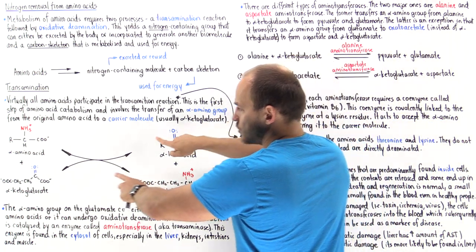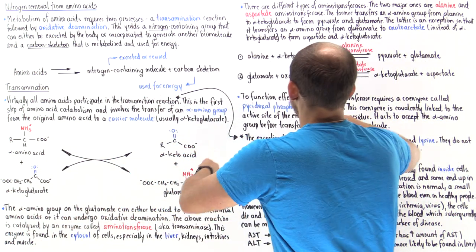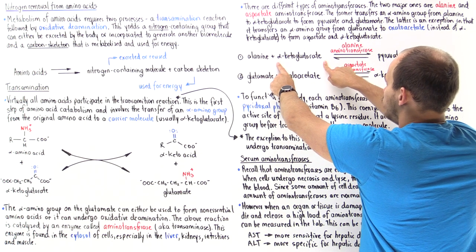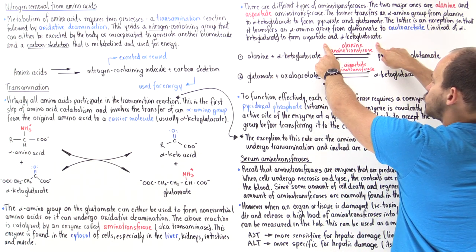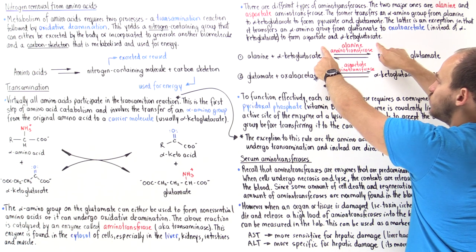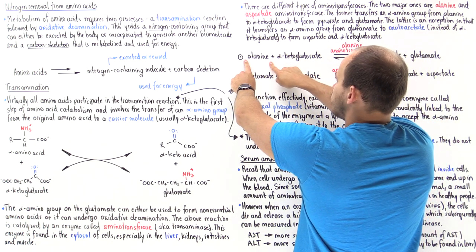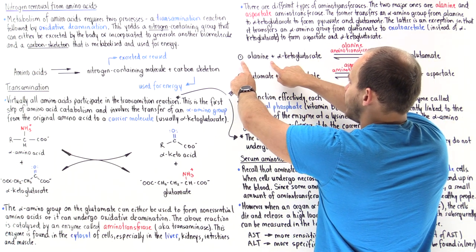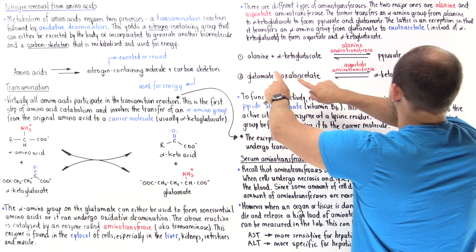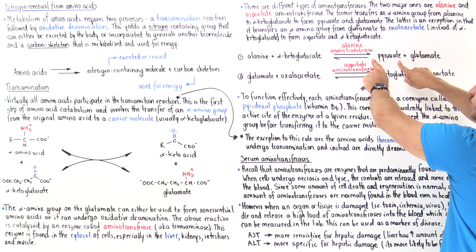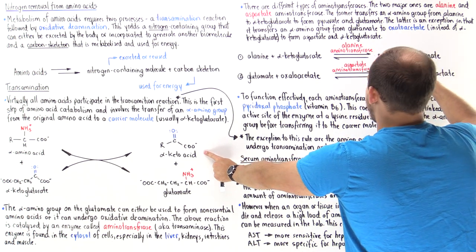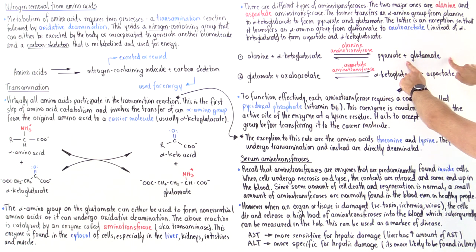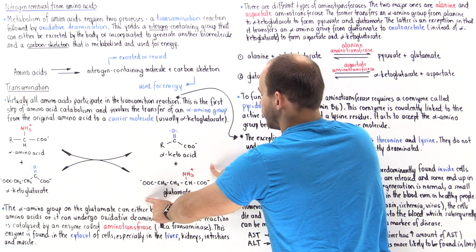Here we have alanine, which is our alpha amino acid, and here we have the carrier molecule that accepts that amino group — alpha-ketoglutarate. Alanine aminotransferase catalyzes the movement of the nitrogen-containing group from the alanine onto the alpha-ketoglutarate. If we remove the amino group from alanine, we form pyruvate — that's the alpha-keto acid. When the alpha-ketoglutarate gains the amino group, we form glutamate.